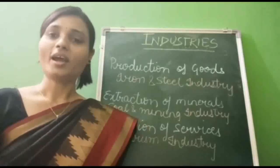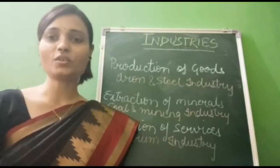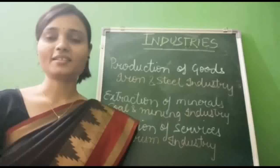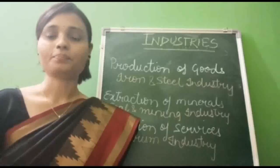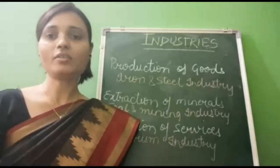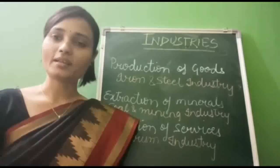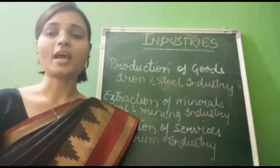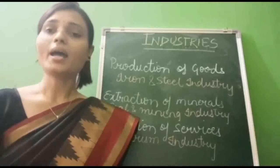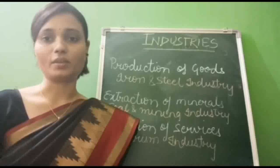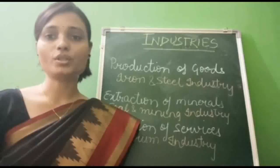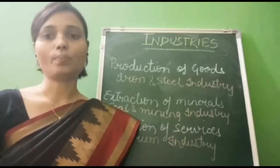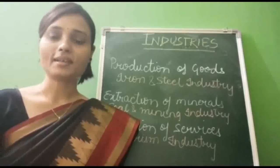Welcome students. Today I am here with the explanation of class 8th geography chapter: Industries. But before understanding this chapter, let's do a quick recap. In the previous chapter you have learned three types of economic activities: primary activity, secondary activity, and tertiary activity. You have learned that agriculture is a primary activity and manufacturing comes under secondary activity, in which raw materials are converted into finished goods. For example, wood pulp is changed into paper and cotton into cotton textiles.